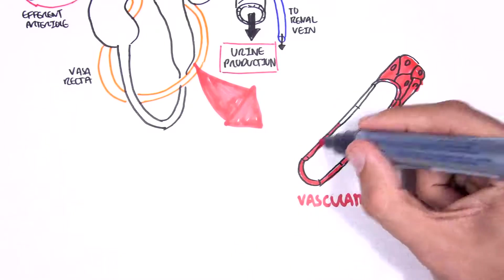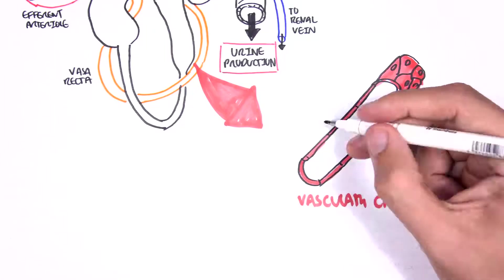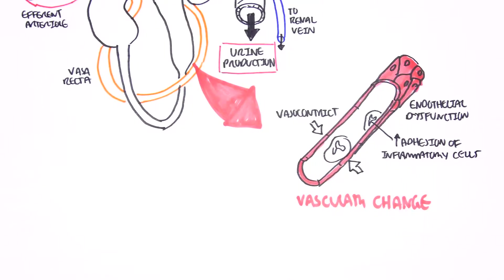We see vasoconstriction particularly in the afferent arteriole, the arteriole coming into the nephron. We can also see an increase in adhesion of inflammatory cells such as neutrophils, and this will cause and aggravate the problem causing inflammation.